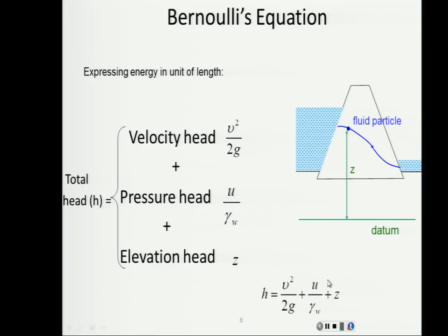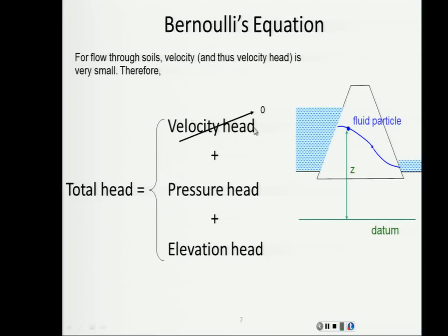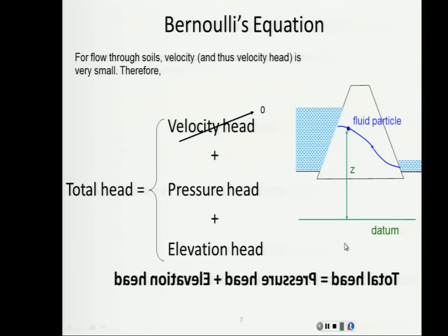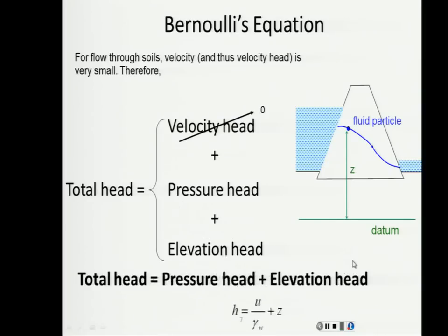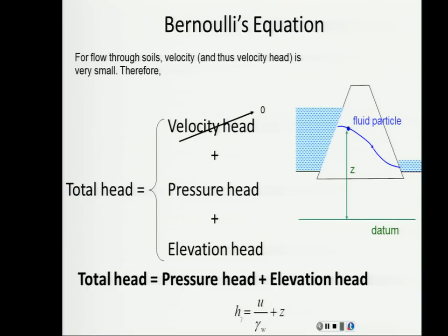In soils, velocity is really small, so the velocity head is essentially zero — except in highly gravelly soils where Darcy's Law wouldn't apply anyway because flow wouldn't be laminar. For our purposes, we assume velocity head equals zero, so total head equals pressure head plus elevation head.